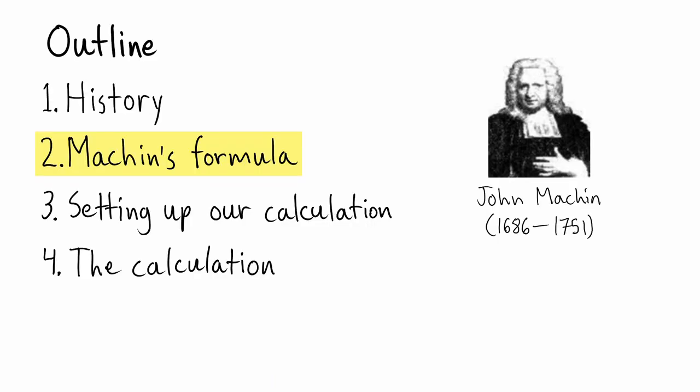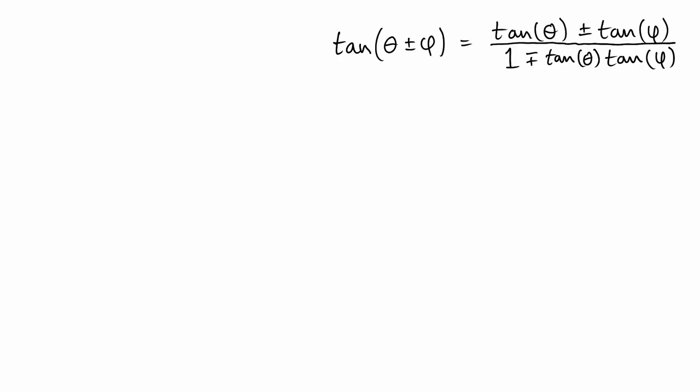While this series converges relatively quickly, there is a way to take Gregory's approach and modify it to converge much more quickly than even this. John Machin was a professor of astronomy in London, and in 1706 he used the following trigonometric identities to set up a formula that would let him calculate Pi to 100 decimal places. The workhorse here is the angle sum and difference identities for the tangent function.